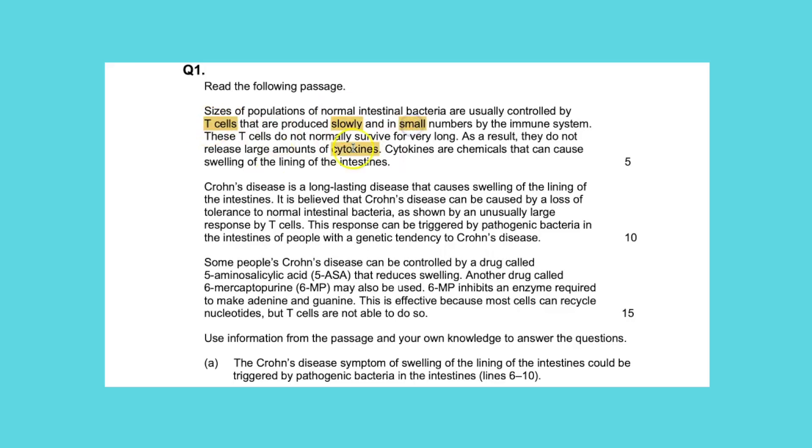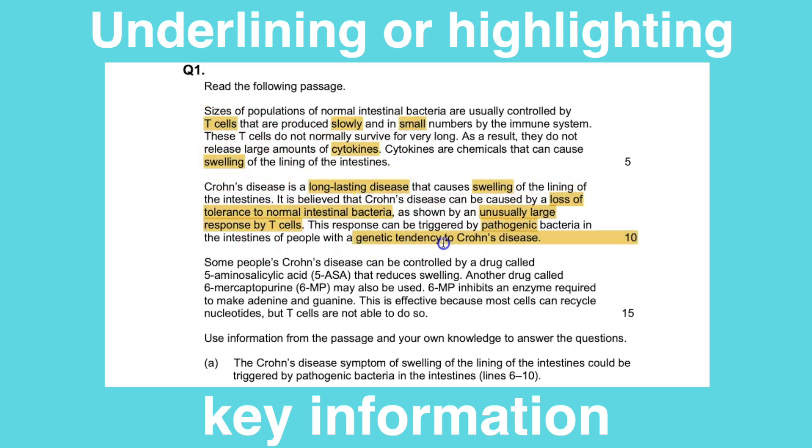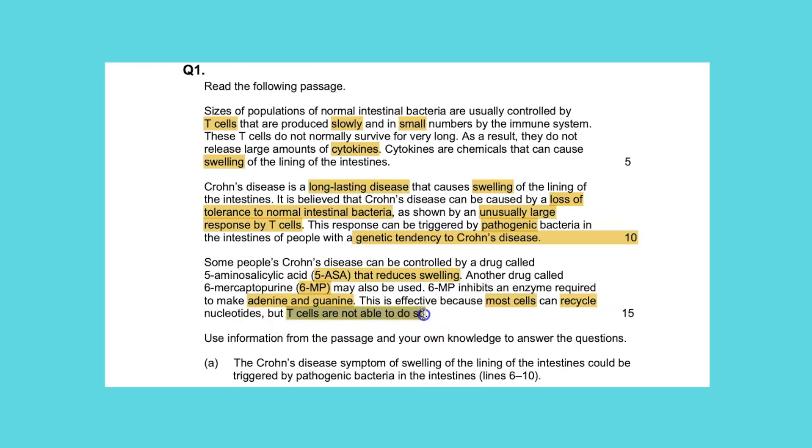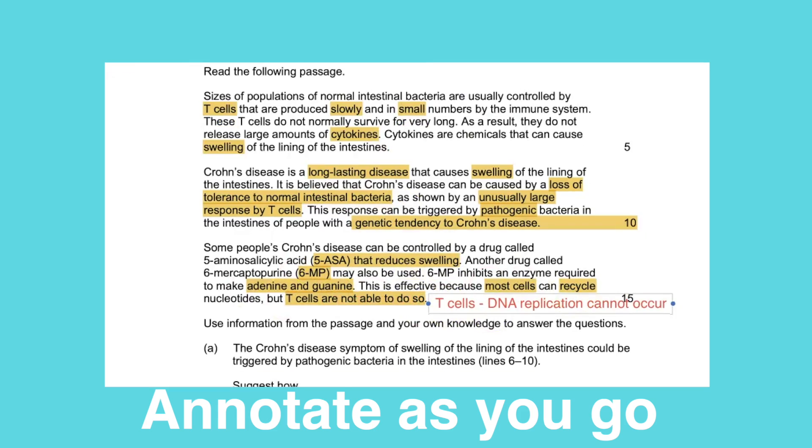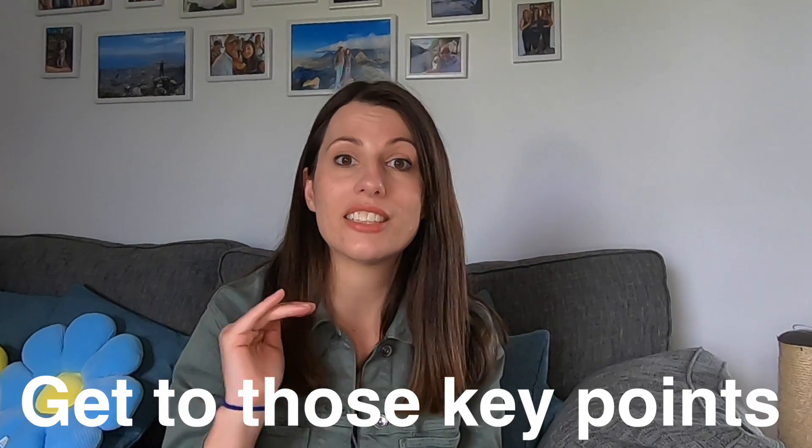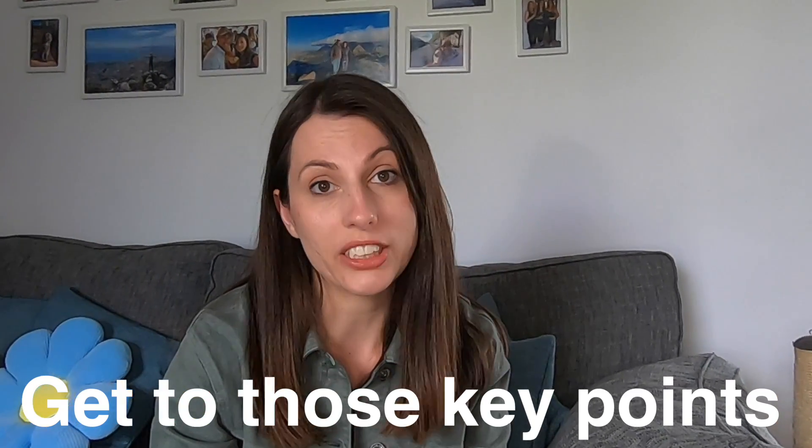What you need to be doing is underlining or highlighting the key information in the block of text that you're given. I always annotate as I go — annotating what information means, what topic it links to, or potential keywords I think could link to it. The reason for that is when you then get to the questions at the end, you can easily find the information and get to those key points to answer those questions.